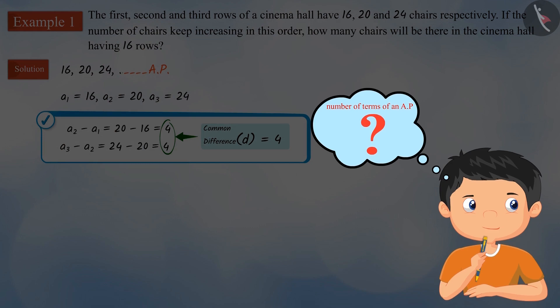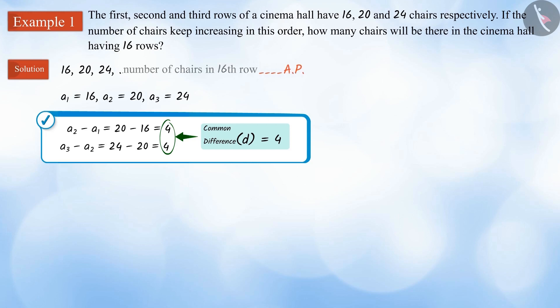Can you tell the number of terms this arithmetic progression will have? As we know, the cinema hall has 16 rows. The number of terms n in this arithmetic progression will be 16.